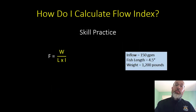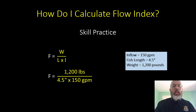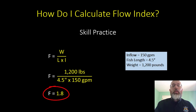We're going to provide the skill practice answers now. Remember your equation: F equals W divided by L times I. In our skill practice, we had 1,200 pounds of fish in the raceway, they were four and a half inches long, and the inflow was 150 gallons per minute. If you plug those into your calculator, you should get a flow index of 1.8.